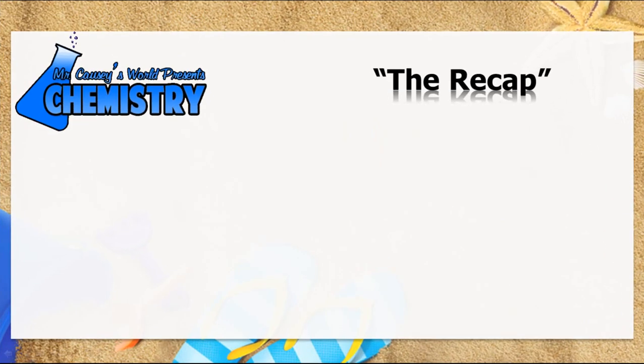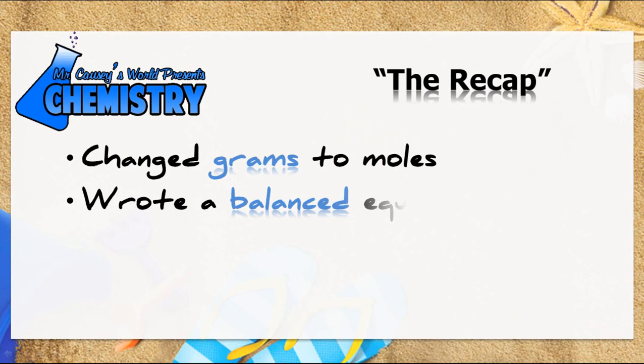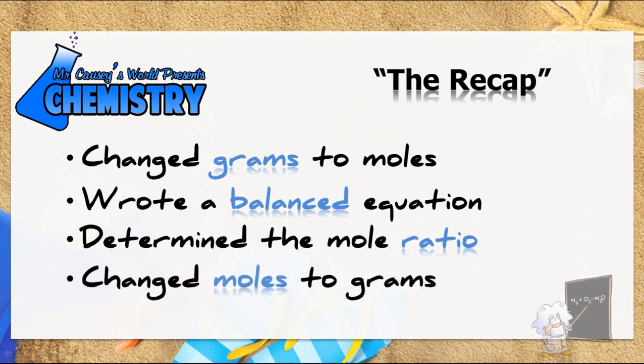Let's recap: we changed grams to moles of mercury-2 iodide, then we wrote a balanced equation — which I actually had to go find. Then we determined the mole ratio, and changed moles to moles, and then moles to grams of potassium iodide.